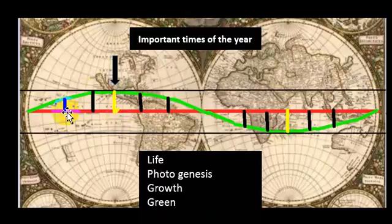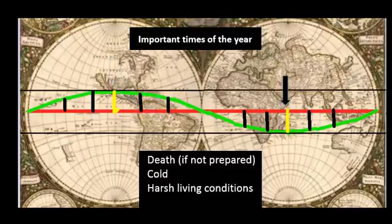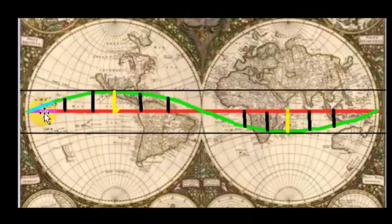The longest day of the year up here represents life, photosynthesis, growth, green, planting seeds. At this part, it's death, cold, harsh living conditions. If you're not prepared here where life and planting of the crops happen, you won't make it through the whole cold winter. This represents death or a death period. Again, I'd like us to pay attention to this sine curve or sine wave going up and down being a cycle.